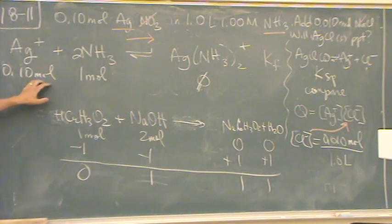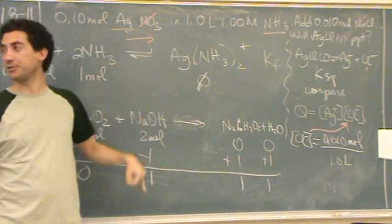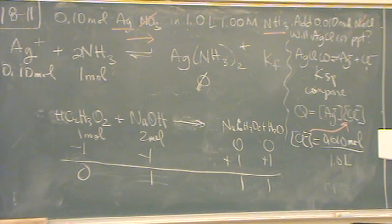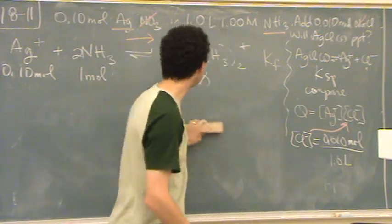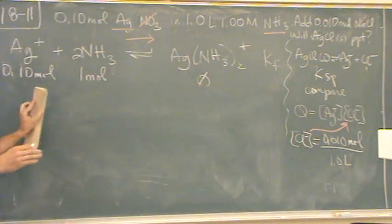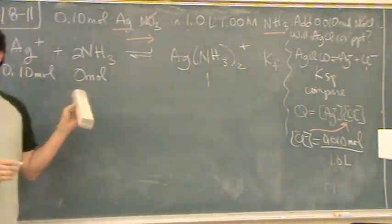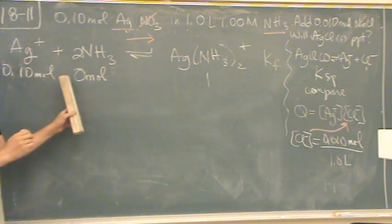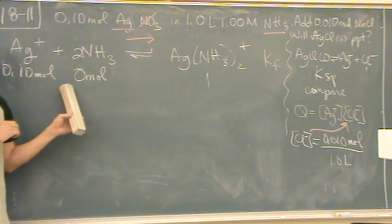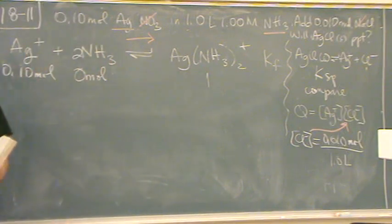The same deal here. So the major concept: if there is a zero in the direction the reaction's going, you must do a stoichiometry. Now, hypothetically, if this was zero and this was, say, one, that's the first line of your ICE table, because the zero is not in the direction your ICE table's going.